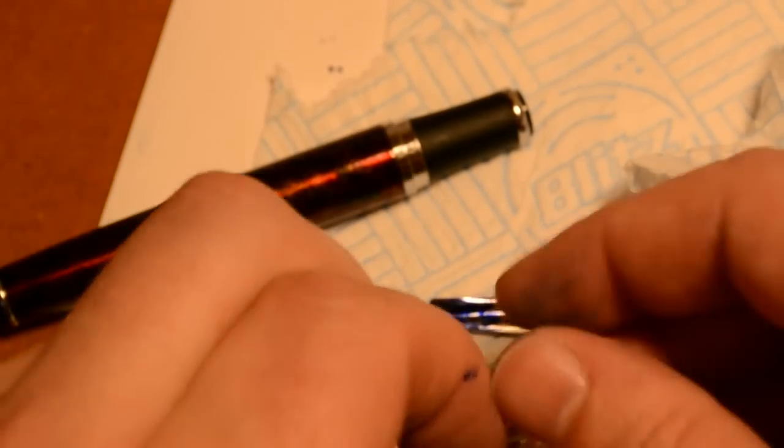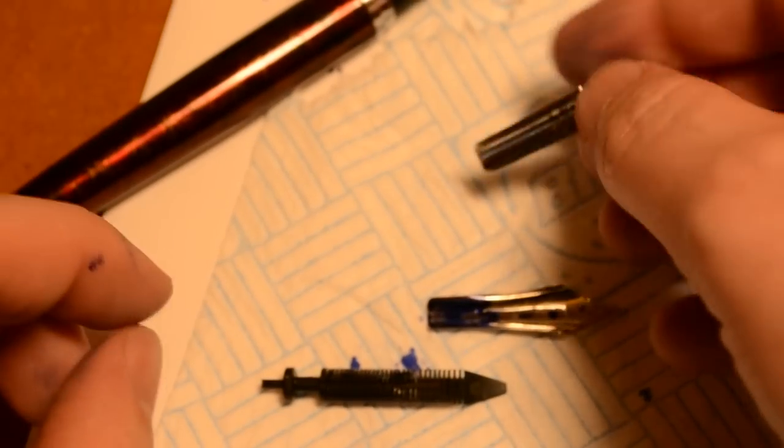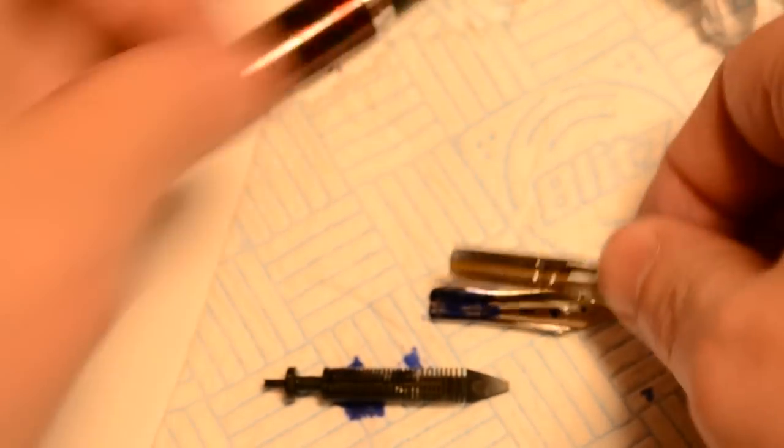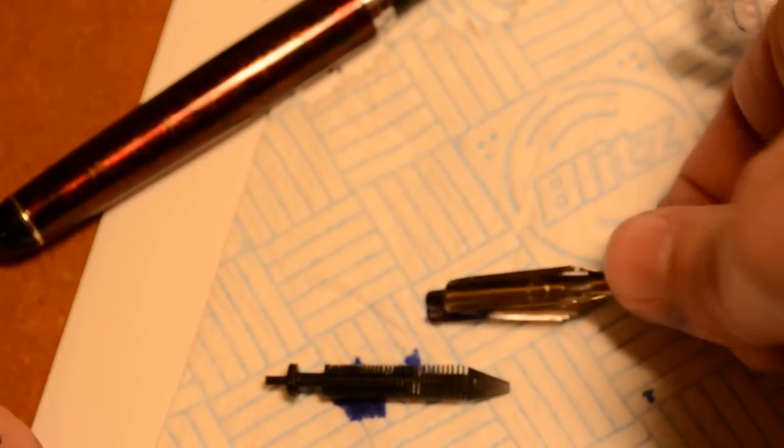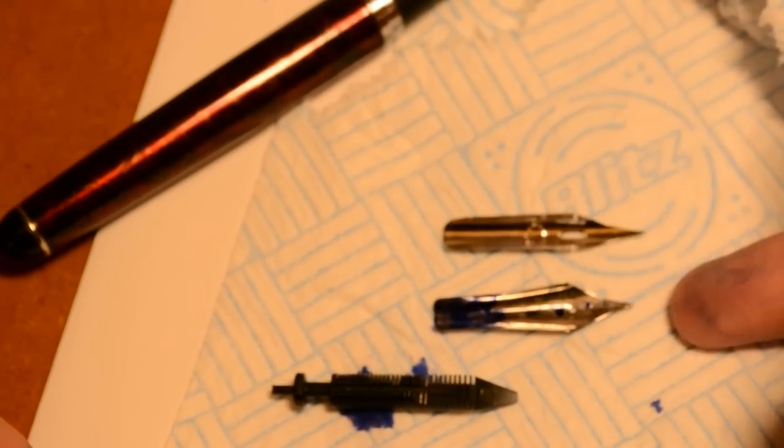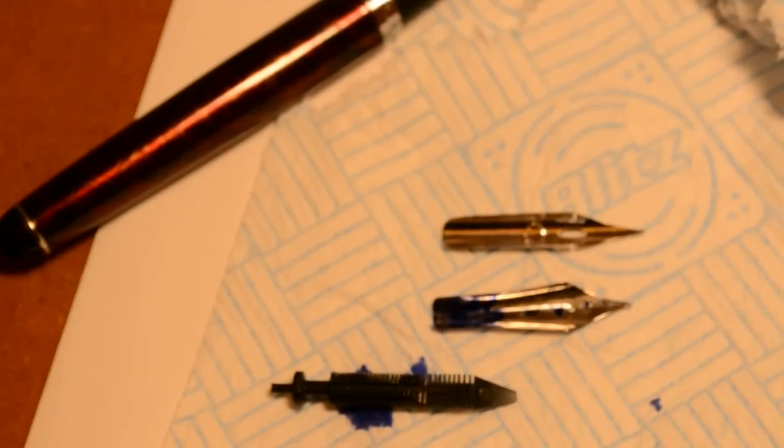Here is Zebra G nib. These two nibs are the exact same size so I can easily put the Zebra G in place of this nib. Not a problem.